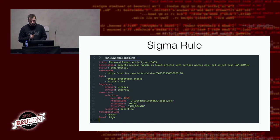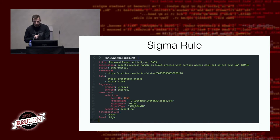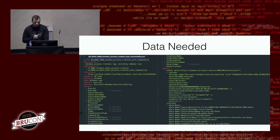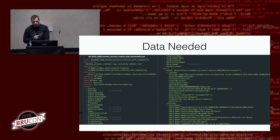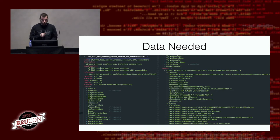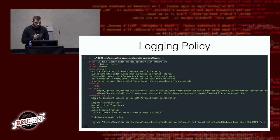Now we need data which can be analyzed by this rule. To store information about the data, we created data-needed entities. These use a simple YAML format and contain a sample log, the fields inside it, and the source. There is another problem: a lot of logs are not produced by default, so you have to configure something. To track this information, each data-needed entity also has a reference to the logging policy. The logging policy provides sample step-by-step configuration of what has to be configured and where, to be able to collect the data.